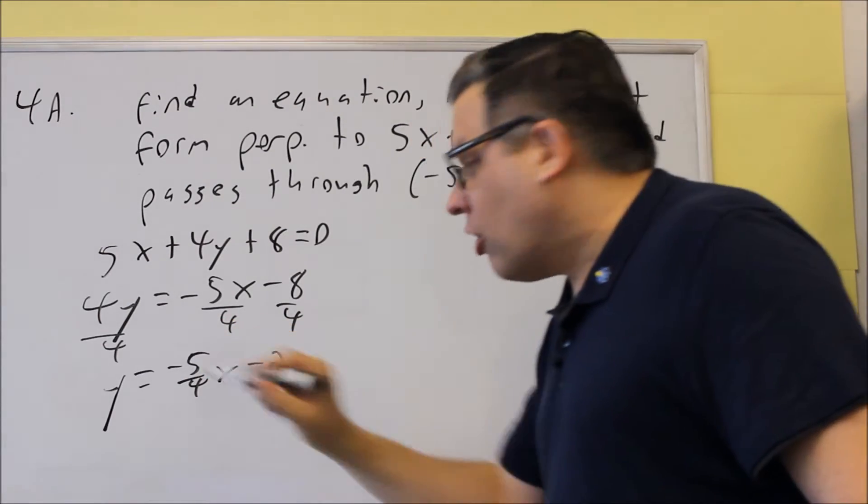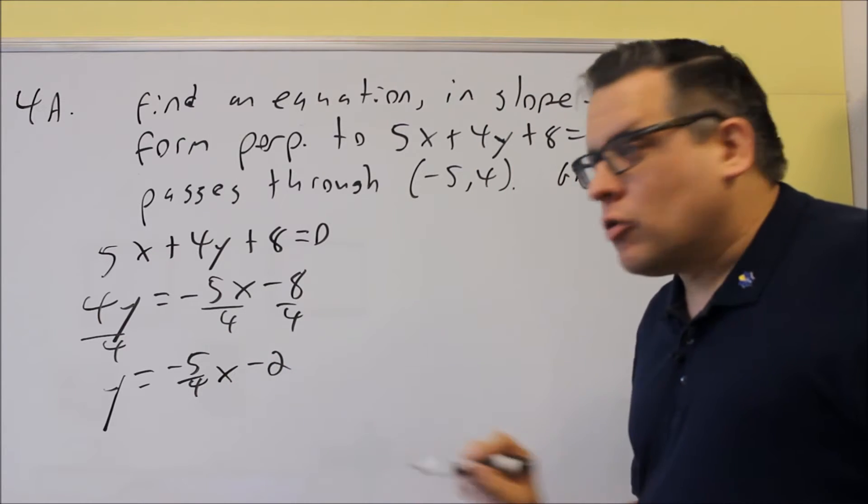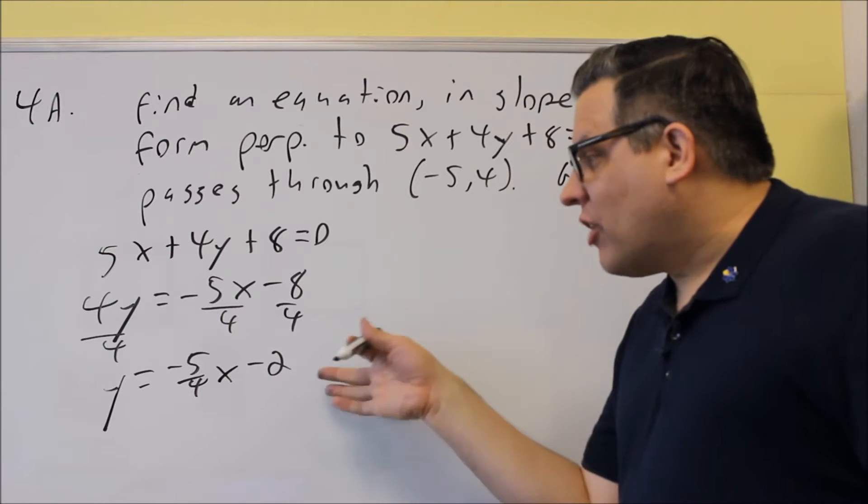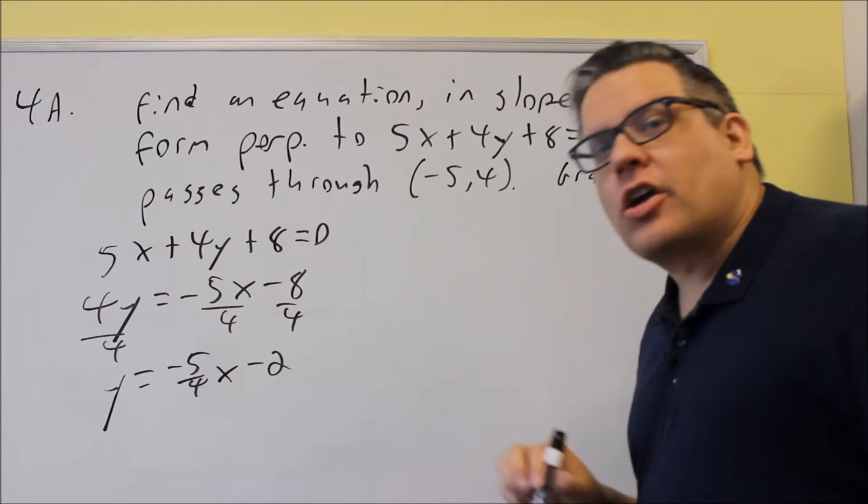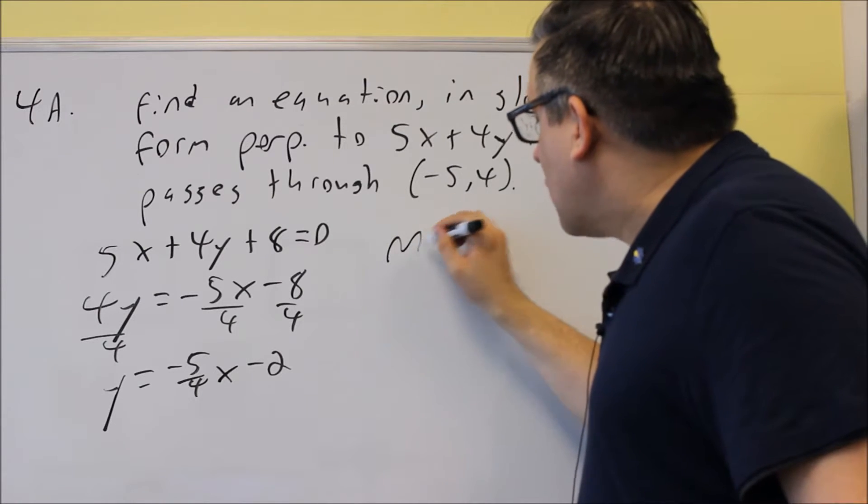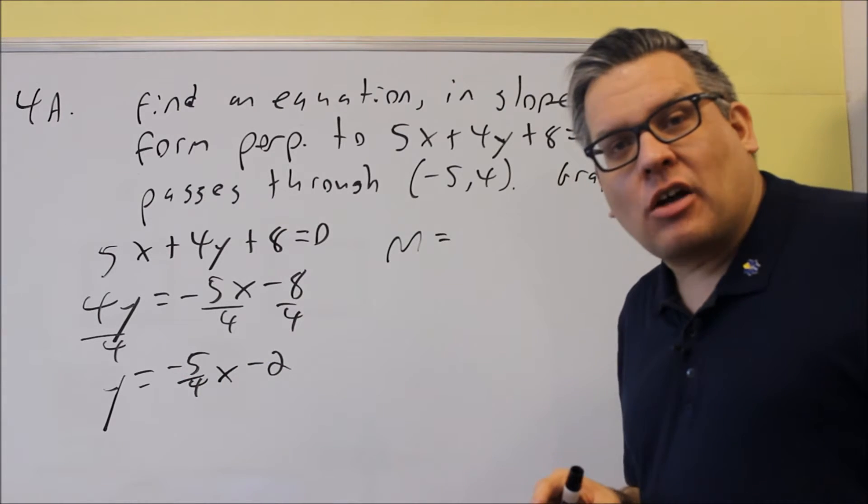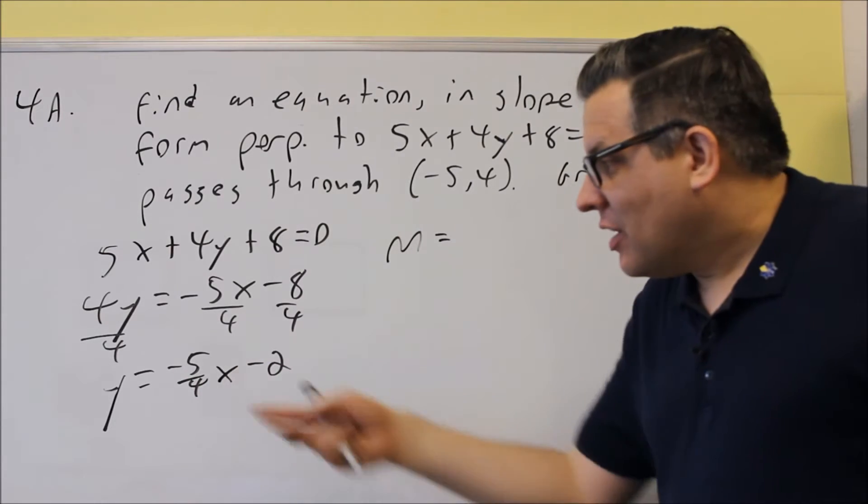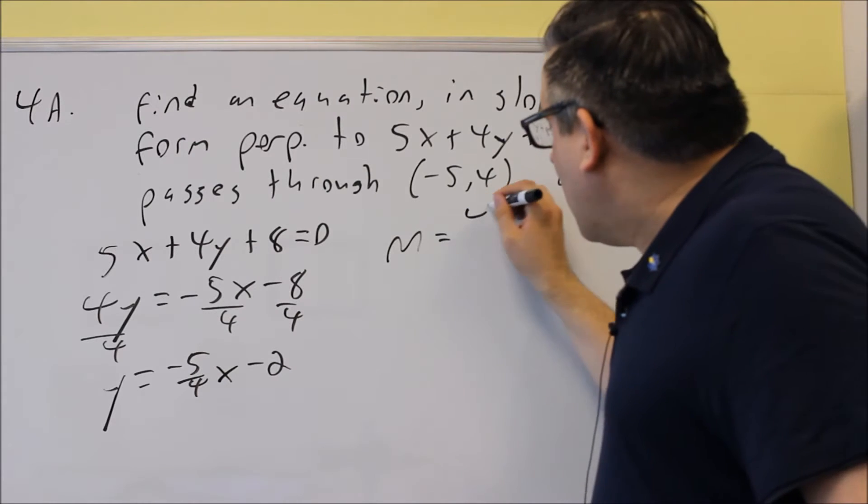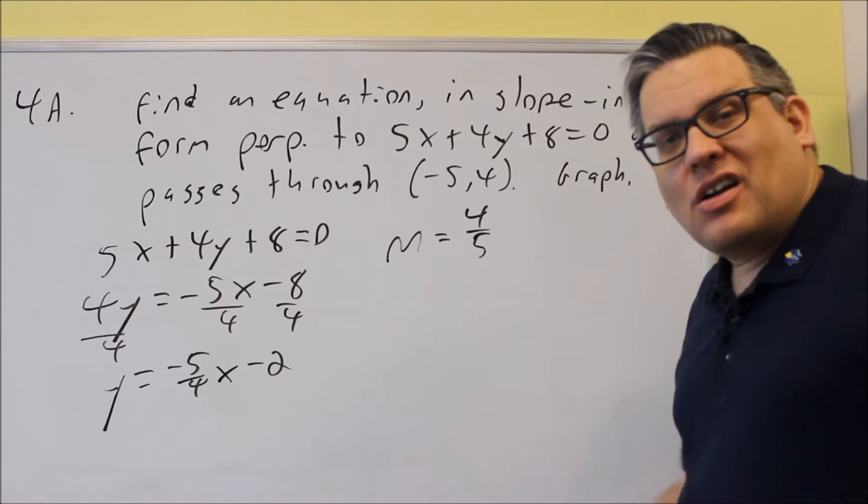So now we know what the slope of the original line is. We don't care about the negative 2. We're only concerned about the number in front of the x. So we want to find a line that is perpendicular to negative 5 fourths. So if we want to find a line that's perpendicular to that, we have to take the opposite, which means we're going to take the opposite sign, so we know our slope's going to be positive. Reciprocal means that we flip those numbers.